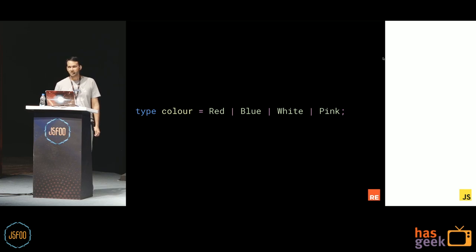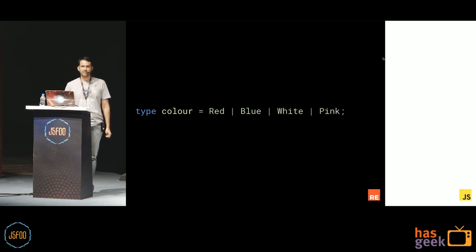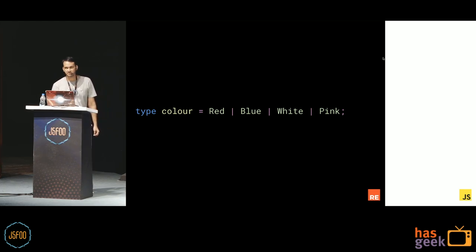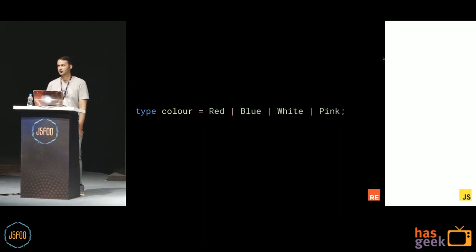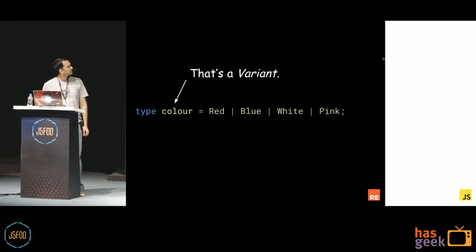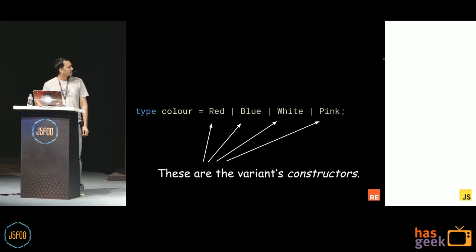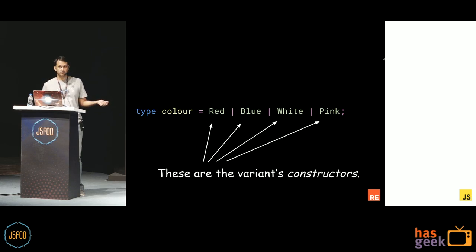Now there is something in Reason that blew my mind when I saw it for the first time — and that is variants. Variants give us a way to model different possibilities in code in a way I had never seen before. So type color is a variant — I'm saying it is either Red, Blue, White, or Pink. Those are the variant constructors. You can read this as: color is either Red, or Blue, or White, or Pink — only one of those things.